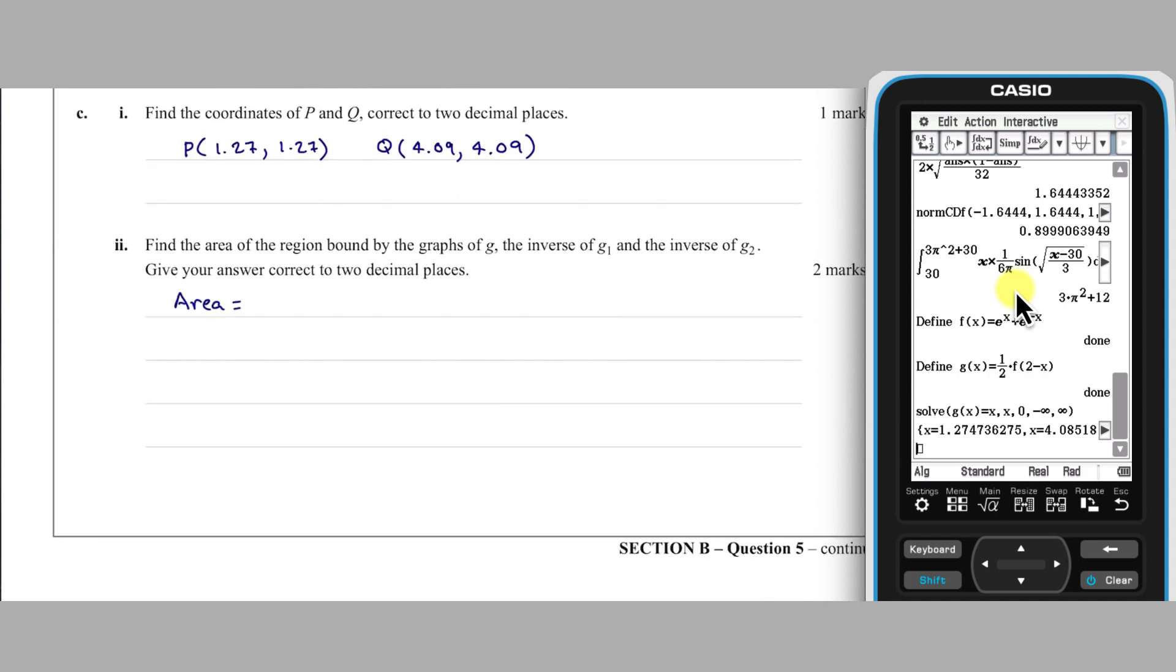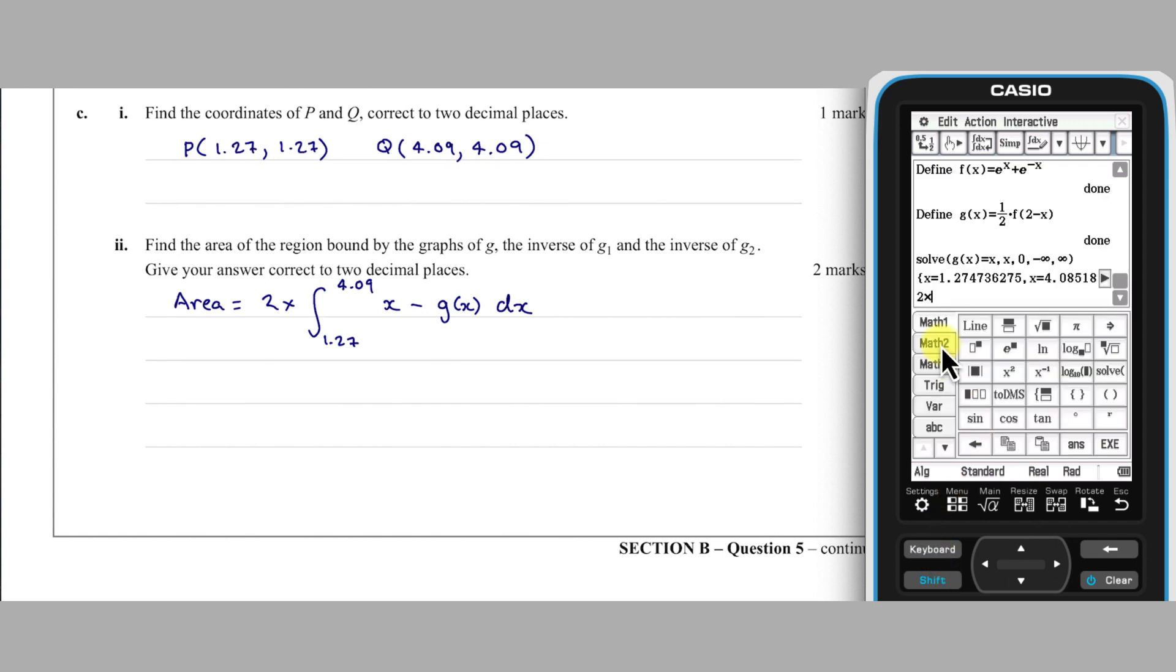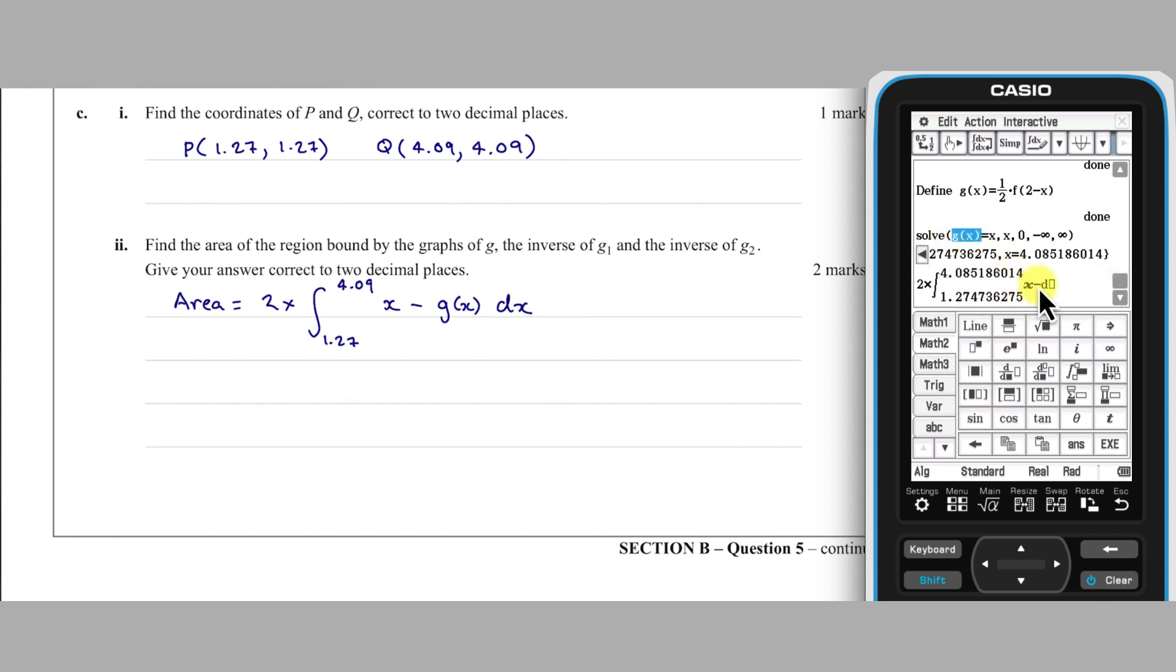As such, I'm going to double the integral from 1.27 to 4.09 of X take G of X DX. This gives an area of 5.56 to 2 decimal places.